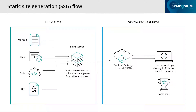Looking at the static site generation flow: at build time on the left-hand side, the build server gathers markup, CMS data, code, and API-related data, bringing it all together to generate pages during build time. On the right-hand side is our visitor request time — we've put that static content on a CDN, and when a user requests the data, it goes to the CDN and directly back to the user's machine. Really quick, but we don't have that dynamic data because we've already pre-rendered the content at build time.